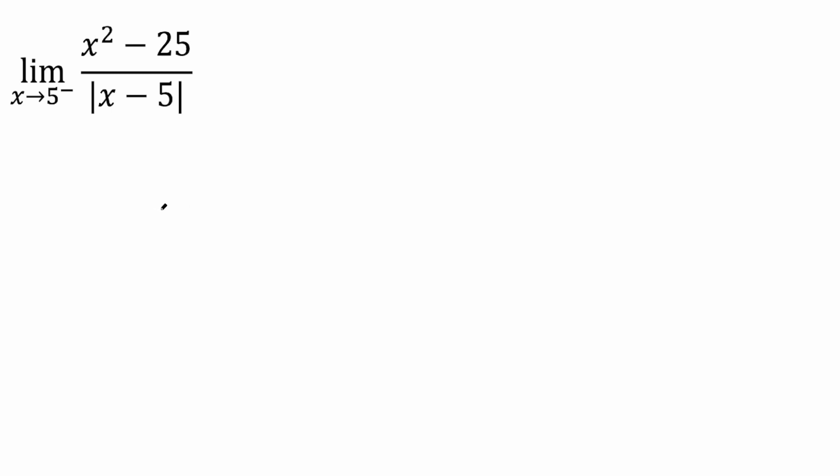Now what I typically do is see if direct substitution can work. So it's saying the limit as x approaches 5 to the left. So if I plug in a 5 here I get 5 squared so 25 minus 25 is 0.